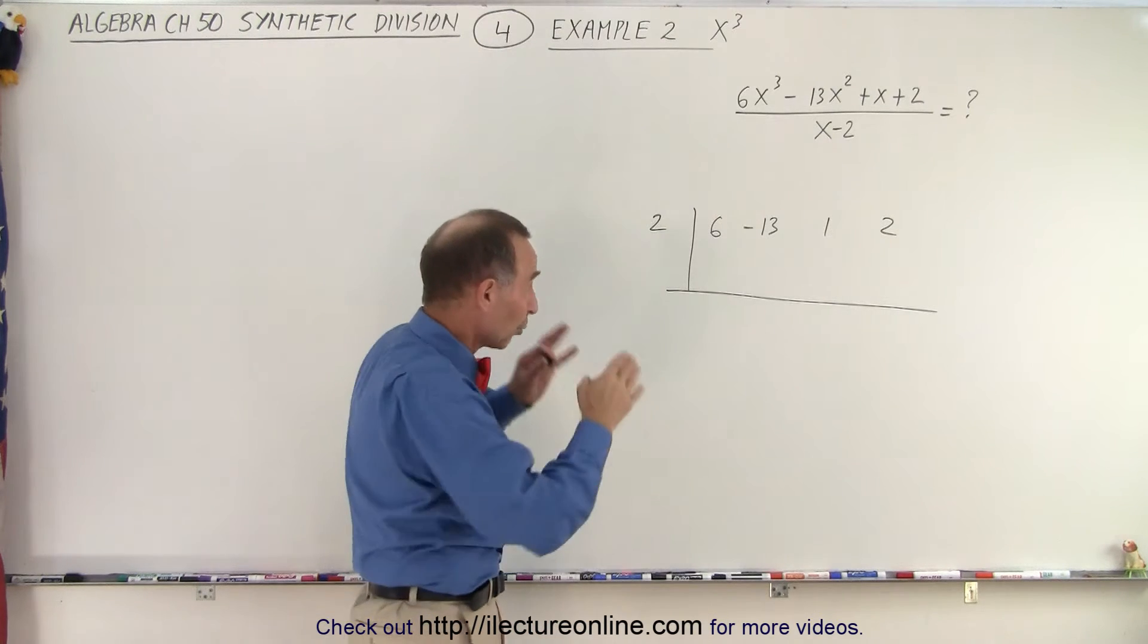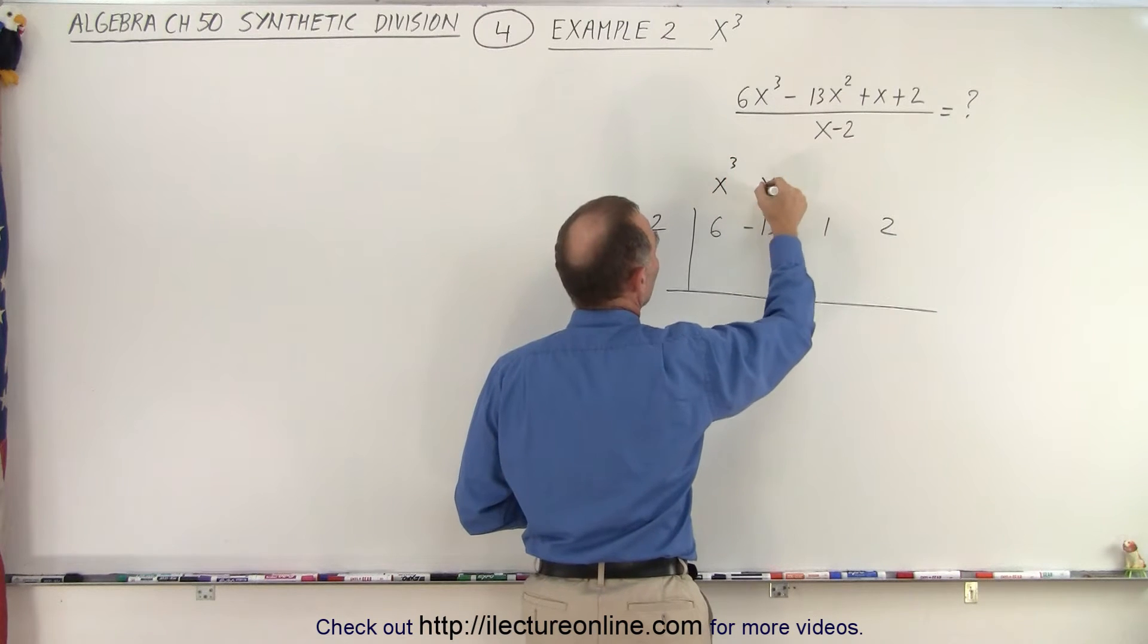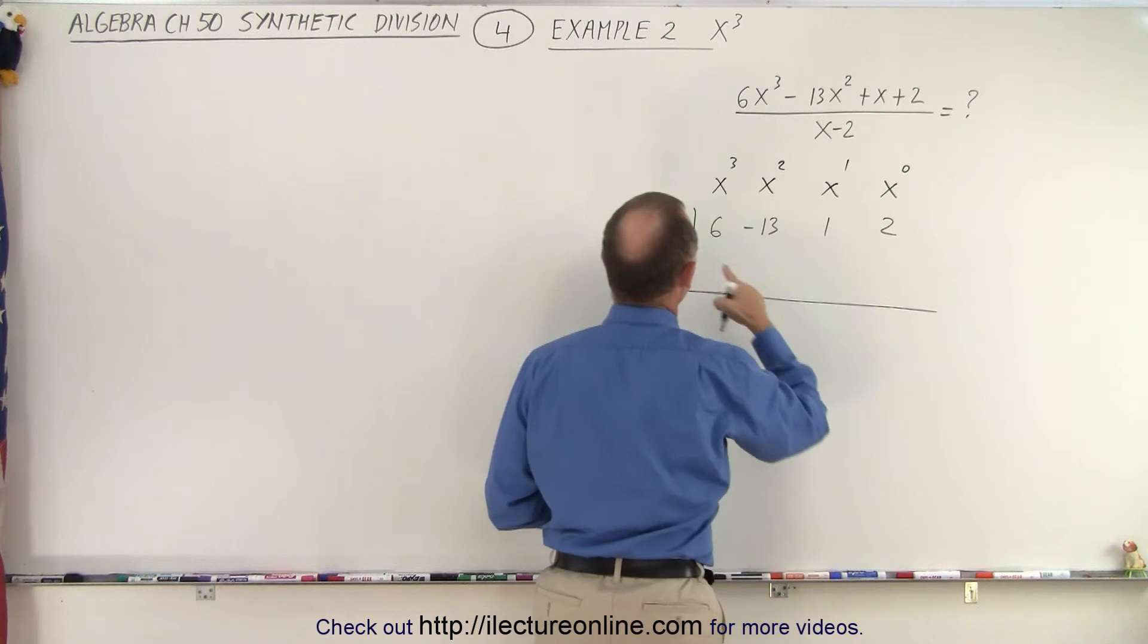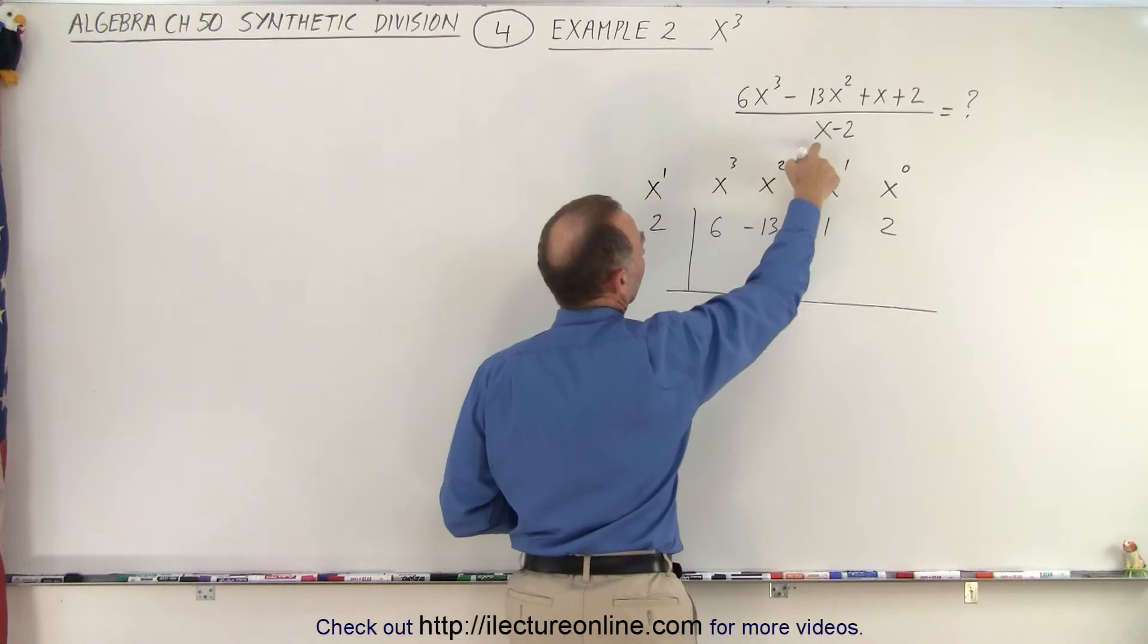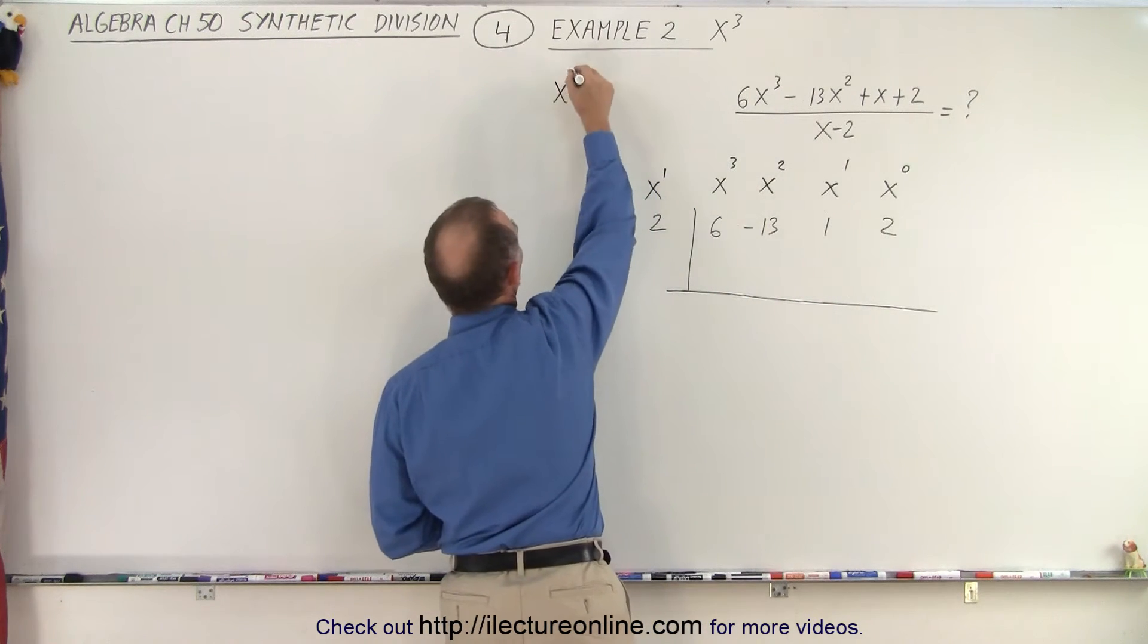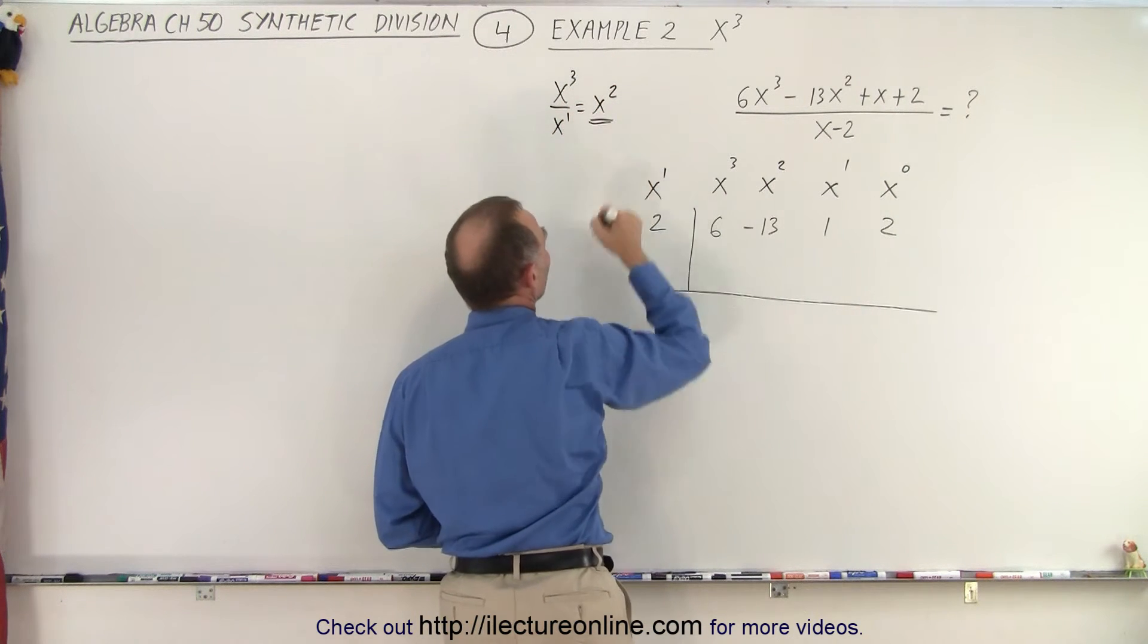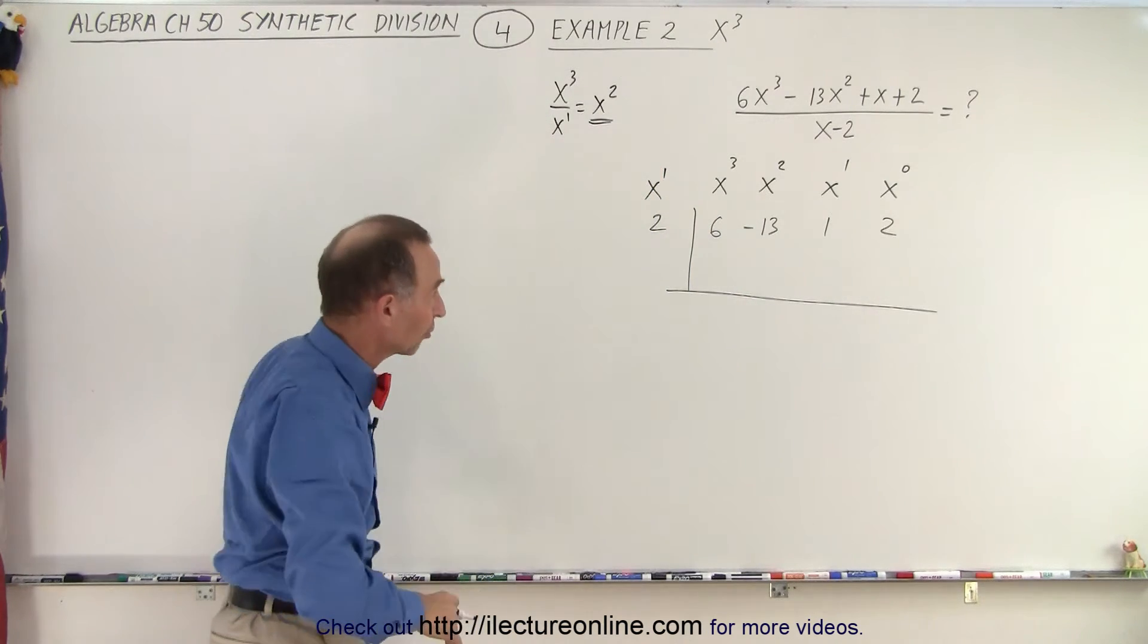Now before we actually work it out, let's write down that this is associated with the x cubed. This is associated with x squared, x to the first power, and x to the zero power. And this is associated with x to the first power because we have an x to the first power there. Which means that our solution here will be x cubed divided by x to the first power which is x squared. So the highest term in our solution will be an x squared and you'll see how that works in just a moment.